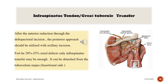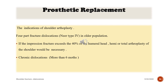Notice the cadaver image of infraspinatus and the anatomic appearance of the posterior aspect of the shoulder: quadrilateral space, axillary nerve, and upper and inferior triangular spaces.